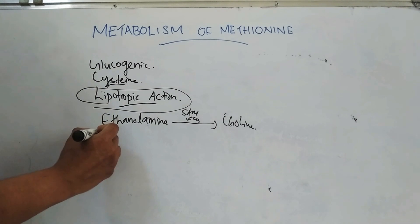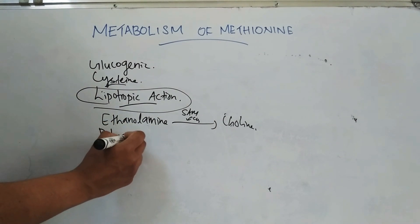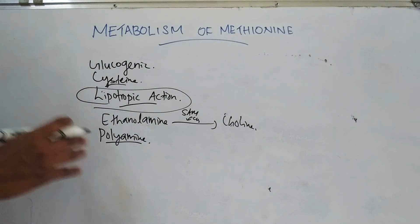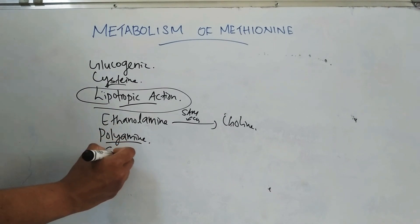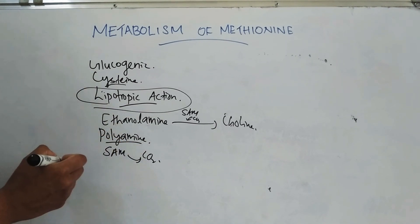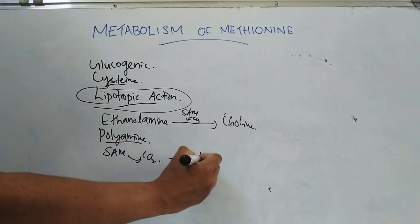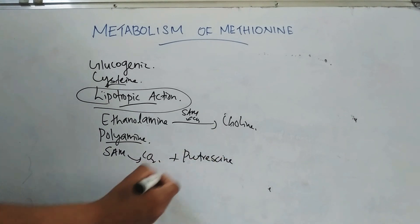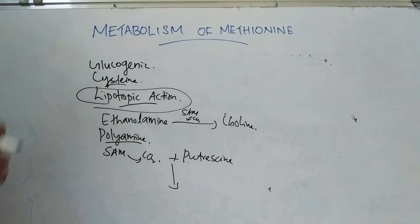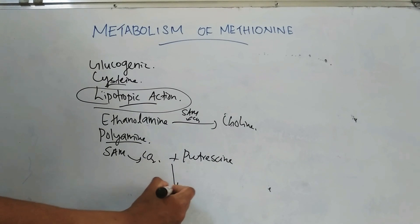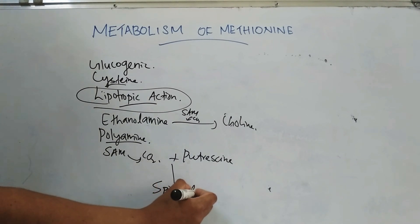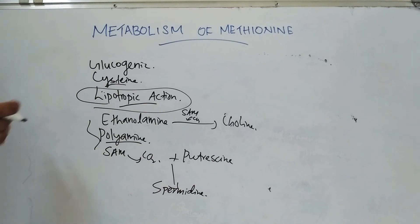Another metabolic role is polyamine synthesis. S-adenosylmethionine, after decarboxylation, can combine with putrescine to form the first polyamine, known as spermidine. These are the metabolic roles of methionine. This concludes the topic of methionine metabolism. Thank you for watching.